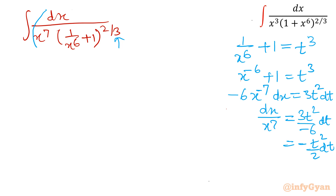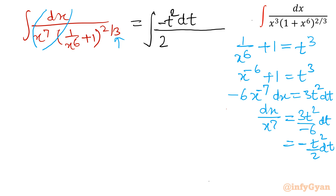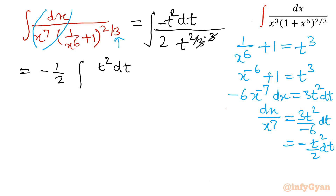Now substituting, we write −t²/2 dt in the numerator, and the denominator bracket (1/x⁶ + 1)^(2/3) becomes (t³)^(2/3) = t². Bringing out the −1/2 constant, we have −1/2 times the integral of t² dt over t².